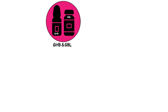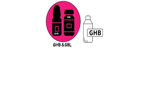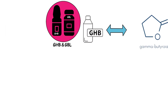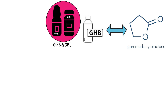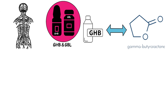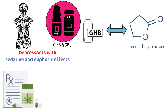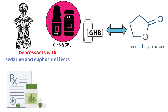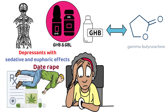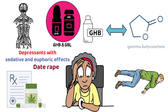GHB (gamma-hydroxybutyrate) and GBL (gamma-butyrolactone) are central nervous system depressants with sedative and euphoric effects. They are sometimes abused as recreational drugs or as date-rape drugs, due to their ability to cause memory loss and unconsciousness.